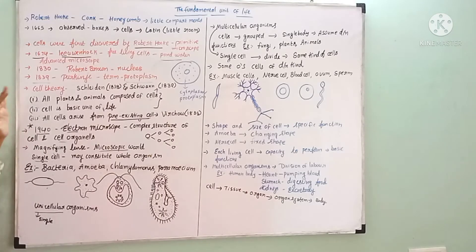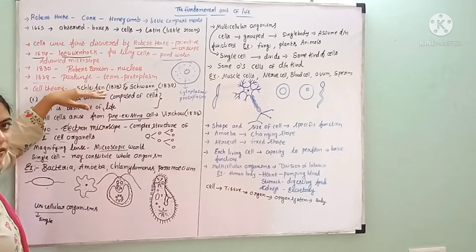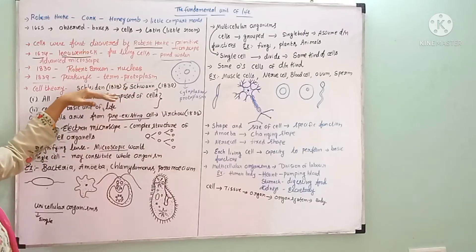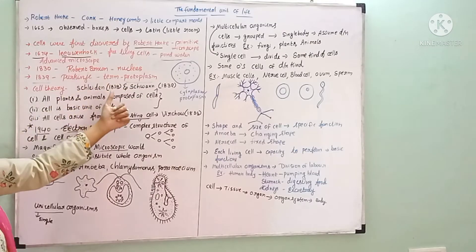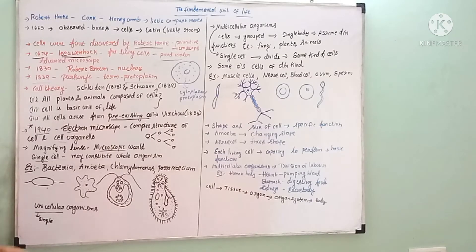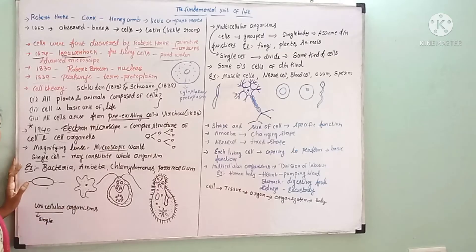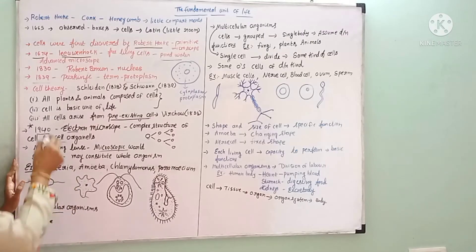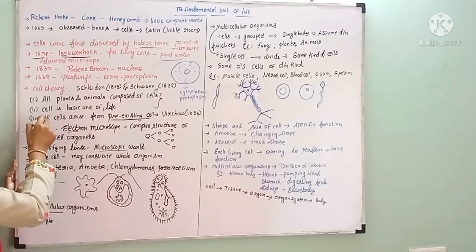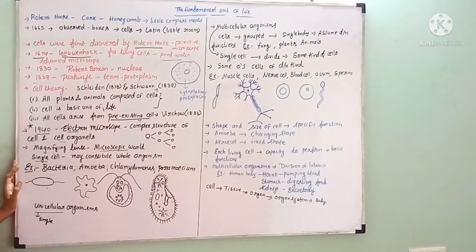The cell theory was proposed by two scientists: Schleiden and Schwann. In 1839, Schleiden and Schwann proposed the cell theory. There are three types of cell theory, and the first two were proposed by Schleiden and Schwann.